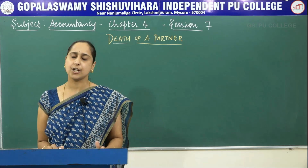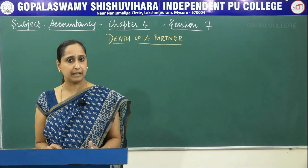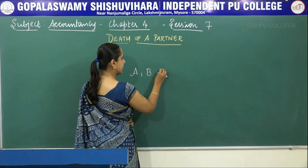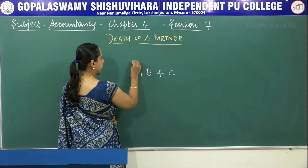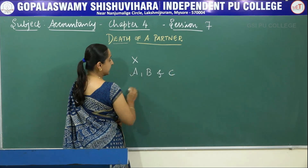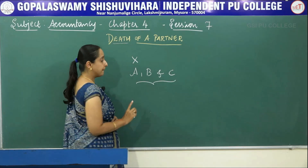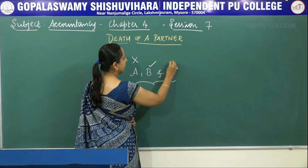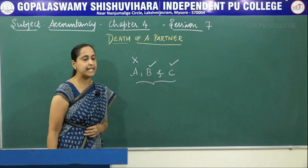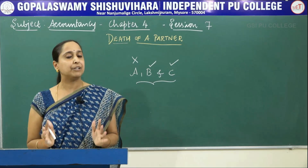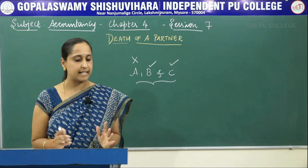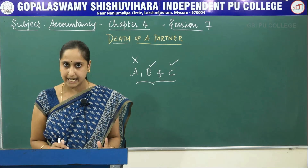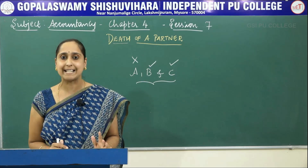A partnership will come to an end on the death of a partner. Let's assume that there are three partners A, B, and C. Suppose if A expires, then their partnership will come to an end. But the partnership firm will not come to an end — that will be continued by the remaining partners B and C. And if the firm continues its business, the amount payable to the deceased partner is required to be calculated and that amount should be given to executors.